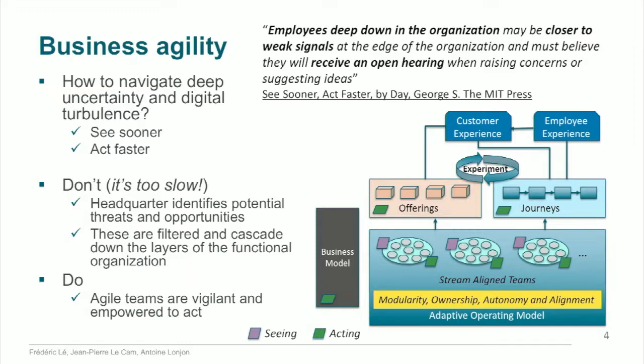Agile teams — sometimes teams of teams — are closer to the field, can see earlier than others, and because they are autonomous, they can respond more rapidly. We'll see in more detail how the agile transformation improves the speed of sensing and the speed of acting in response to changes in the environment. This model requires autonomous, cross-functional teams.